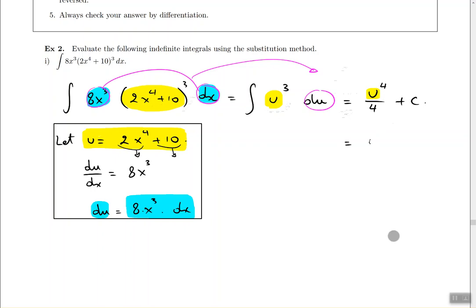Because now you just have to do this. Remember, u was 2x⁴ + 10. So just replace it with 2x⁴ + 10. Everything else pretty much stays. And that's the end. We're finished with the problem.